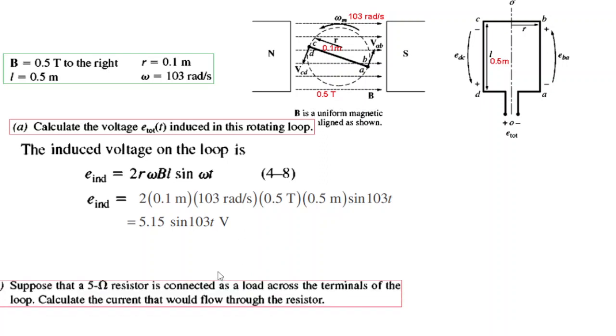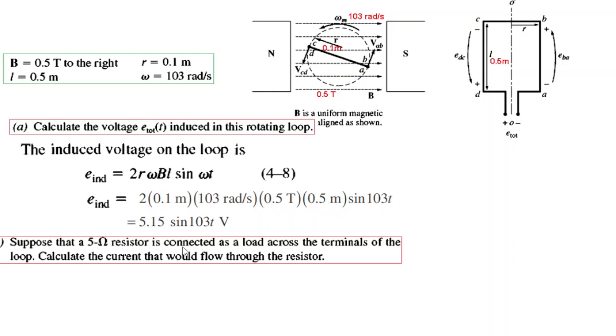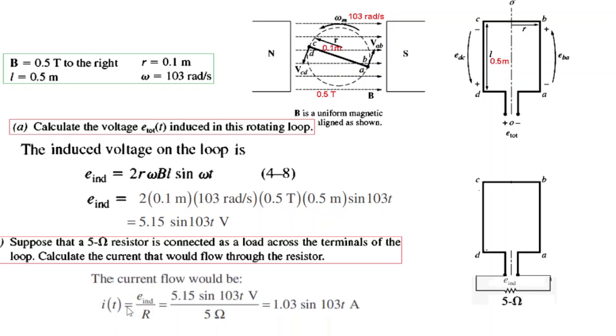The next question is suppose a 5 ohm resistor is connected as a load across the terminal to the loop. Calculate the current flowing through the resistor. So very simple, the voltage is induced here but current cannot flow unless we connect a resistor or provide a path. So we have connected a 5 ohm resistor. So we can easily calculate the current by I is equal to V over R or here I is equal to E induced over R. This is the induced we calculated from here. R 5 ohm. So this is the current flowing in the circuit.